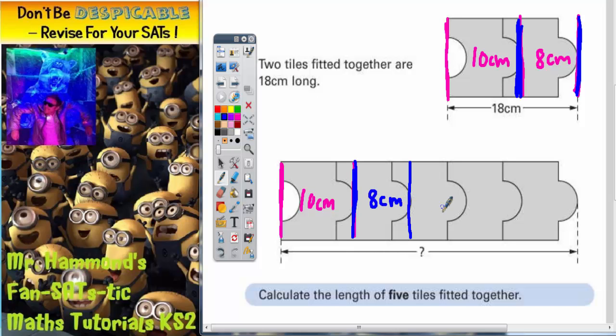Now we can keep doing this all the way along. End of the second tile to the end of the third tile will be 8 again. End of the third to the end of the fourth will be 8 centimeters again.